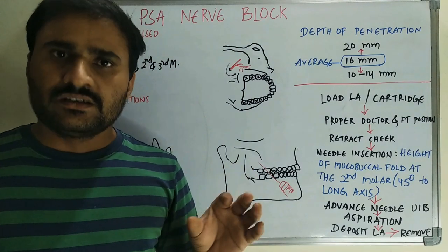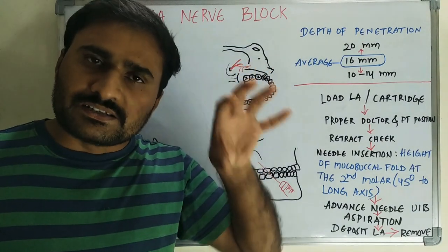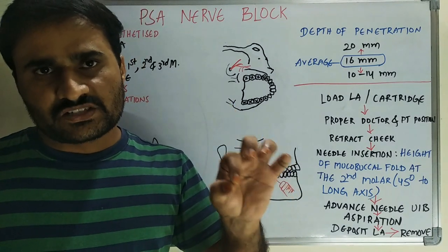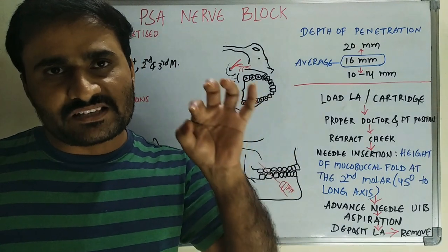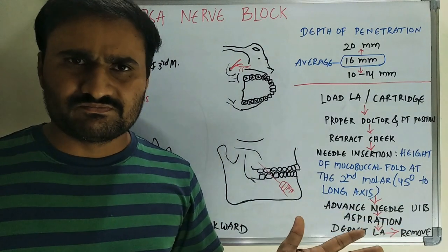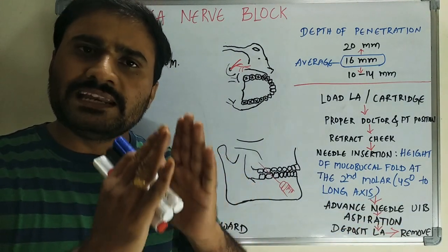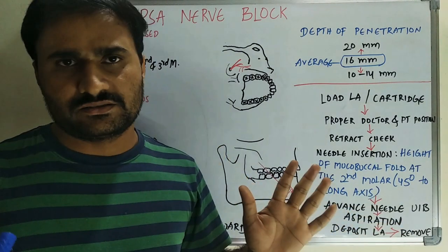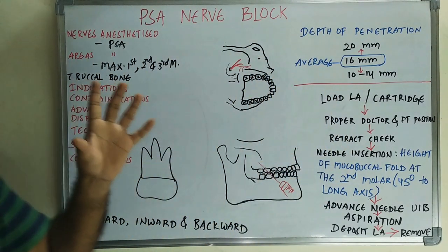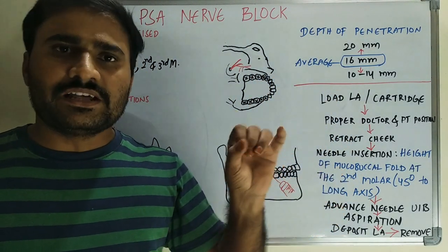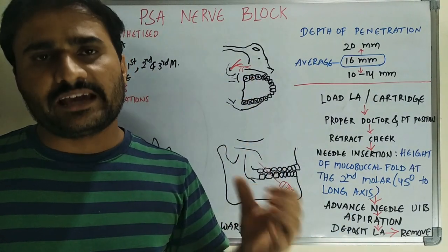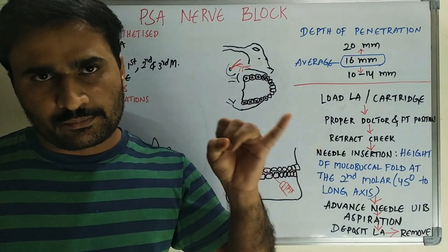If you have already done a supraperiosteal injection and it is ineffective and the patient still complains of pain, in those cases you will go for a nerve block. Indication is the same for any nerve block, except for the teeth regions. Contraindication is also the same — if there is excessive hemorrhagic tendency, like in cases of hemophilia patients, it is contraindicated.